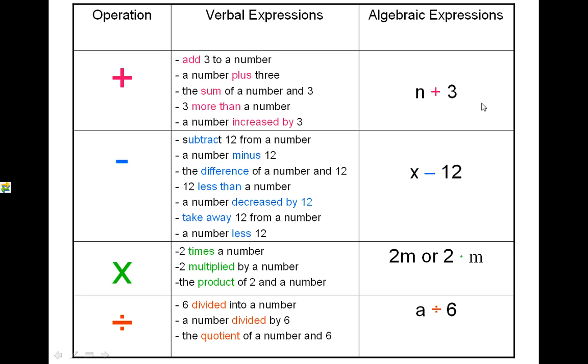So this over here would be the algebraic expression, the math, that you would write down. So if you add 3 to a number, that number is going to be represented by a variable. So if you add 3 to a number, it'll be n plus 3. Now you can put any variable there. It could be z plus 3, x plus 3, k plus 3, whatever number you choose. A number plus 3, the sum of a number in 3, and so on.